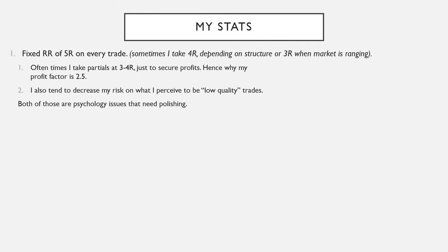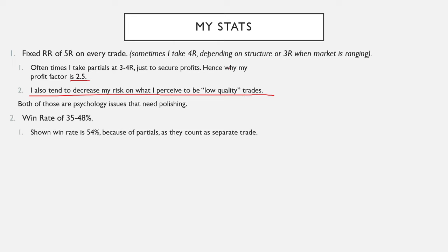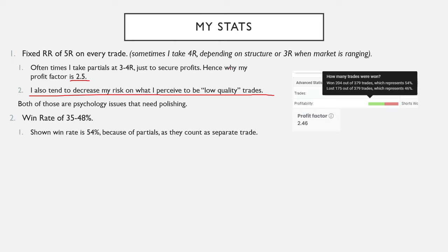My stats: I take a fixed risk-to-reward of 5R — sometimes 4R depending on structure, or 3R when the market is really ranging and choppy. I often take partials to secure profit, which gives me a profit factor of 2.5. I also tend to decrease my risk on what I perceive to be low-quality trades, which is more of a psychological issue. My win rate ranges from 35 to 48%. On my Facebook track record I show 54% win rate, but that's because partials count as separate trades. My profit factor appears lower because I take partials rather than full TP at 5R.